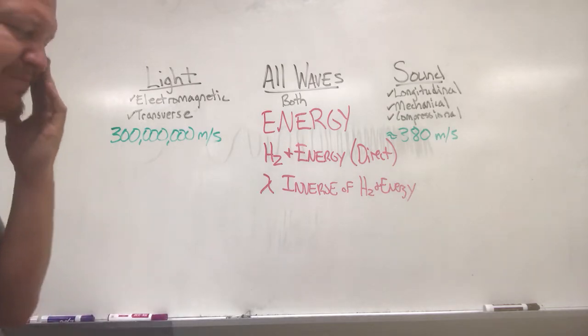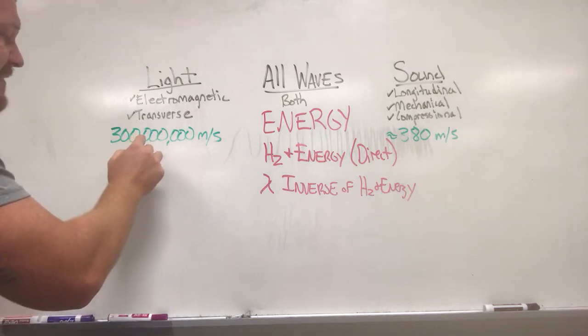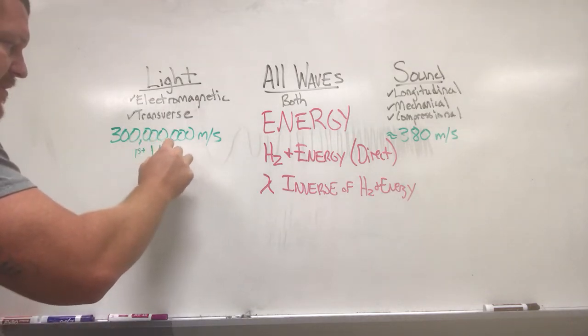Light travels best when there's nothing in the way, when it can just travel free, it doesn't have to worry about any friction. And this is how light gets from the sun to the earth, traveling through the vacuum of space. So it's going to travel fastest in the vacuum.